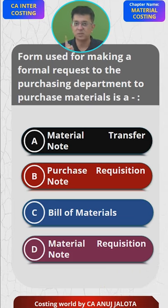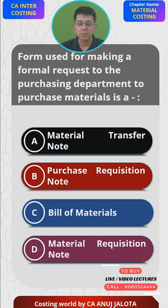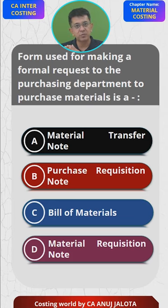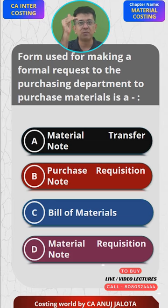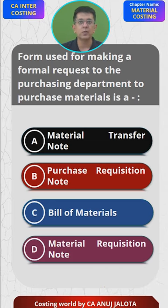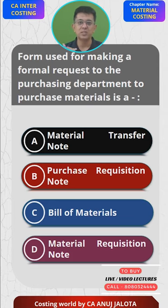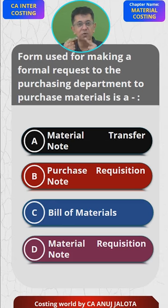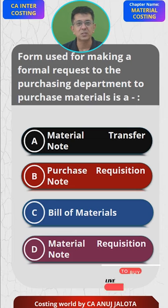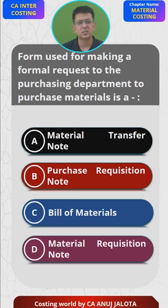So A, C, and D are all ruled out. Option B — Purchase Requisition Note: the storehouse keeps issuing raw materials to the factory, so its stock levels keep going down. On one fine day, that stock level will touch the reorder level. Once it touches the reorder level, the storehouse makes a formal request to the purchase department to please purchase this raw material. Then the purchase department contacts suppliers and purchases the materials. So the correct answer is B — Purchase Requisition Note.